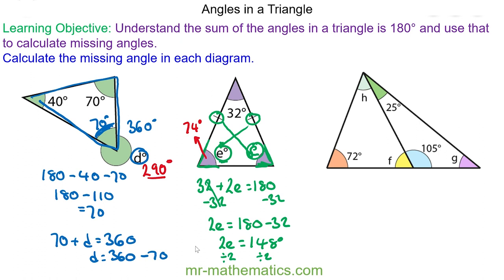We can check that this is right: we have 32 plus 74 plus 74 and that does make 180. If you haven't tried the last question already, do you want to pause the video and try it now? You can resume it when you're ready.